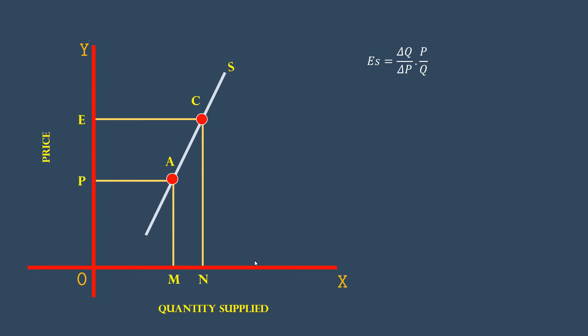Based on the graph, we shall plug in the values. Delta Q is MN. Delta P is PE. P is OP and Q is OM.